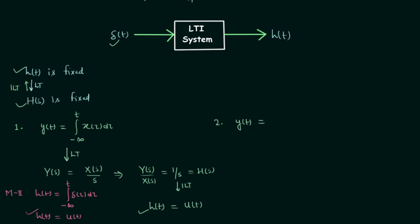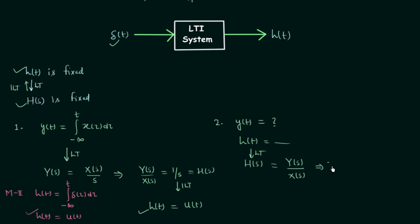Now we move to our next problem. In this problem y(t) is unknown, but h(t) is given. To calculate y(t) we can use a mathematical tool known as convolution. The transfer function H(s) can be easily obtained by taking the Laplace transform of the given impulse response. We know H(s) = Y(s)/X(s) when all initial conditions are zero, and from here we can write the output Y(s) = H(s) · X(s). We are interested in calculating the output of the system.